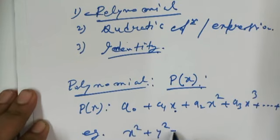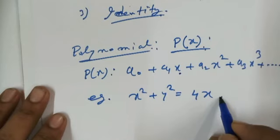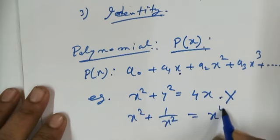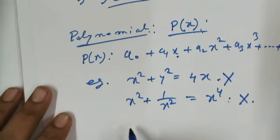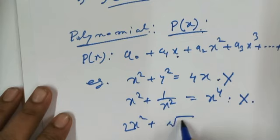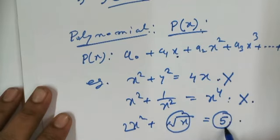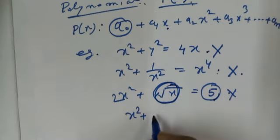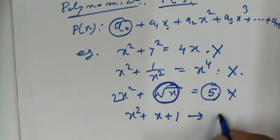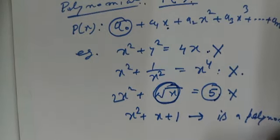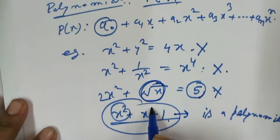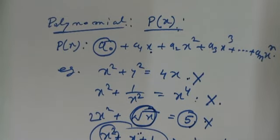Example: x² + y² = 4x — is this a polynomial? No, this is not a polynomial. x² + 1/x² — this is also not a polynomial. 2x² + √x = 5 — is this a polynomial? No, because √x cannot appear in a polynomial. But x² + x + 1 is a polynomial, because the powers are positive integers and it has constant terms.